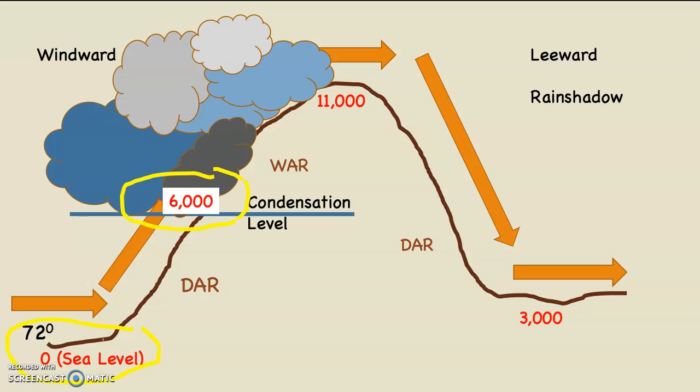The air is going to rise from zero sea level up to six thousand feet. That's six thousand feet. We're going to multiply the DAR, the dry adiabatic rate, which is 5.5 degrees Fahrenheit per thousand feet, times six, because the formula is already in thousands. 5.5 times six is 33. Is it 33 degrees hotter or colder up there at 6,000 feet on the windward side? The answer is colder.